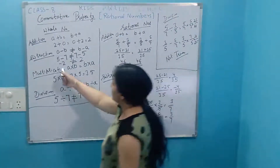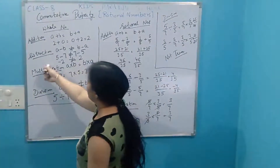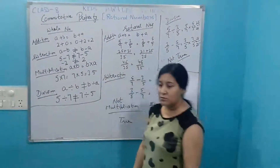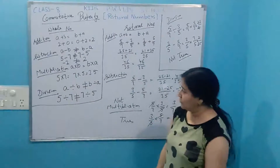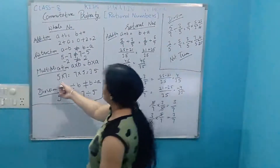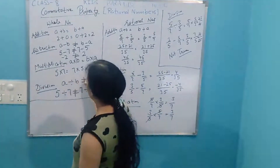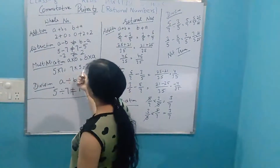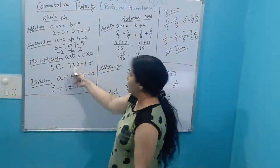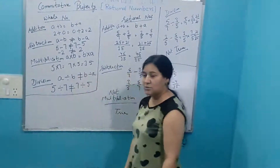Minus two is not equal to two. It means the commutative property under subtraction is not true for all numbers. Next is multiplication. Take two numbers: 5 and 7. Five into seven is 35, and seven into five is also 35. Both are equal, so in the case of multiplication, commutative property is true.